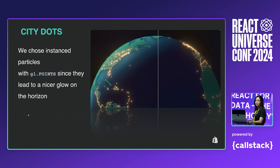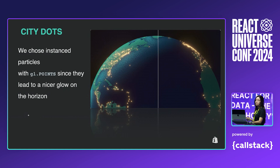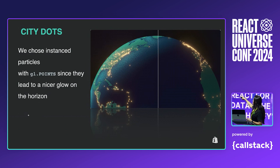Another feature in the Globe last year was the glowing dots, meant to represent the places where orders were placed in the past 24 hours. We debated whether to use meshes aligned to the surface, as we were doing with the arcs, or to use particles that always face the camera. The difference is very subtle, but we chose instanced particles with GL points since they led to a nicer glow and just looked a little bit cooler. You can see the one we ended up going with on your right — it looks a little bit more shiny.